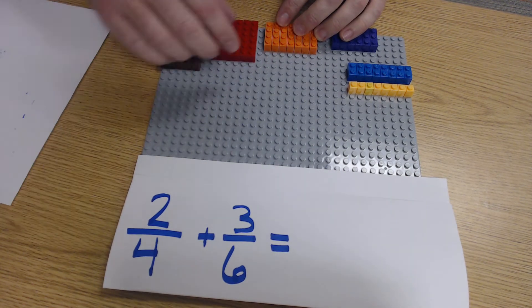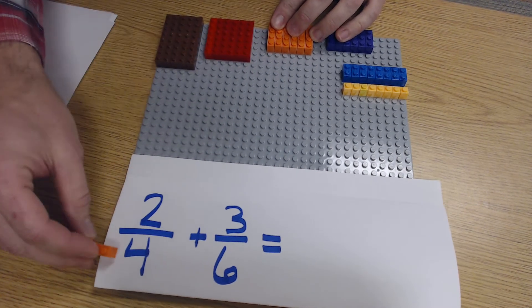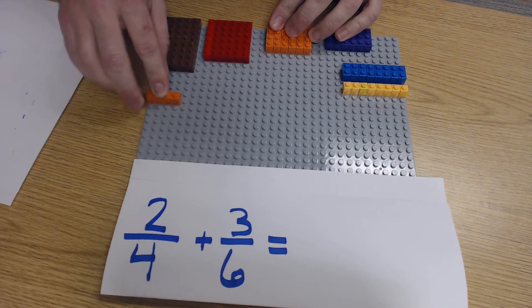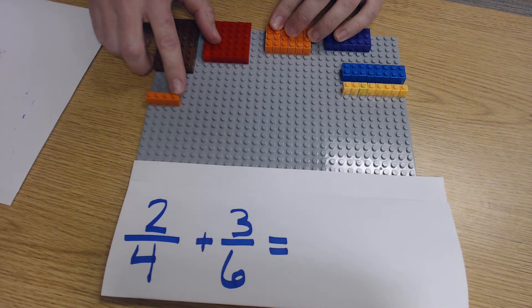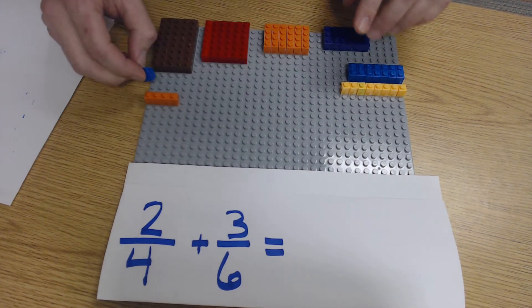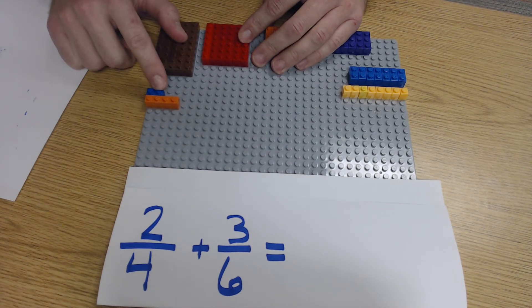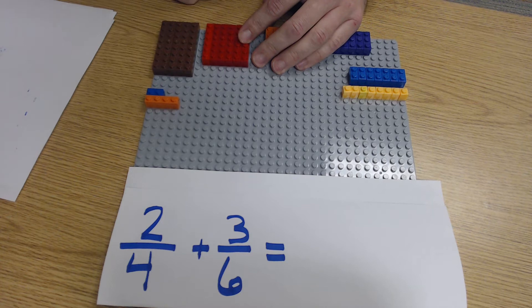So I'm going to start by building my two-fourths. First I'm going to start with my denominator, which are fourths. Put right there is my Lego one, two, three, four. How many of them are there? There's two. So here's my Lego representation of two-fourths.